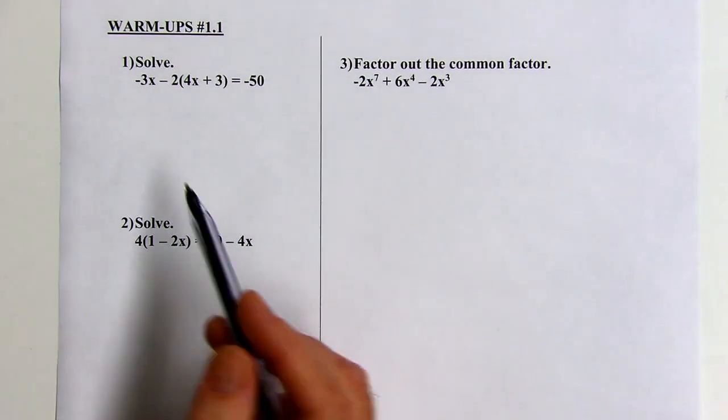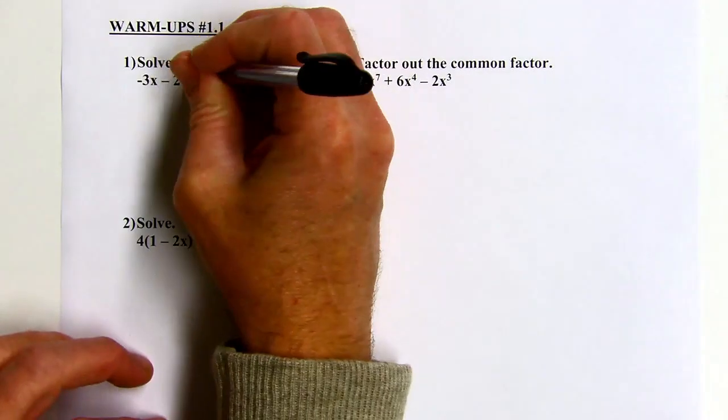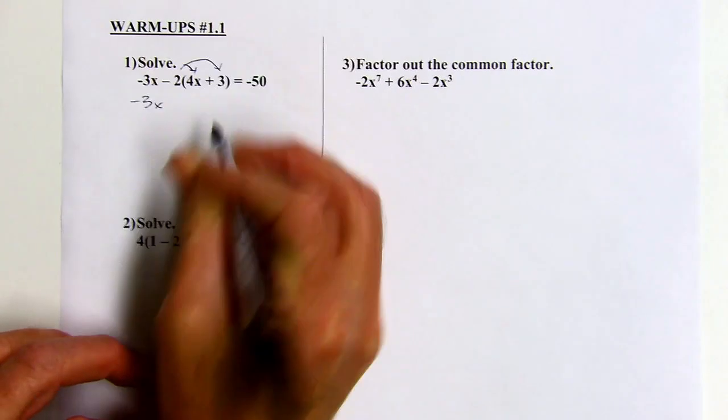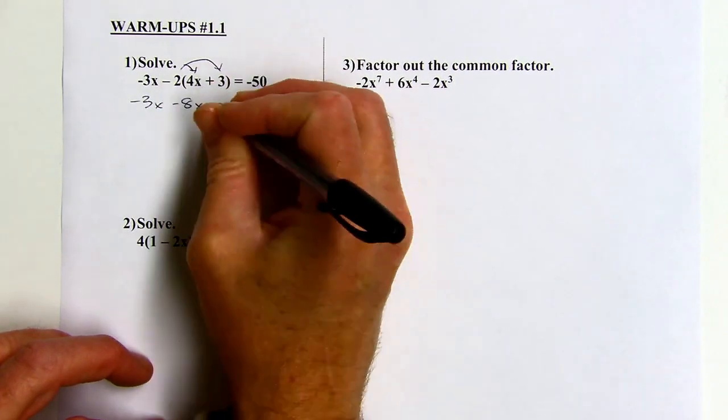Okay, so the first thing I want to do is eliminate the parentheses, and I can do that by distributing the negative 2. So, let's see, negative 2 times 4x would be negative 8x, and negative 2 times 3 is negative 6.